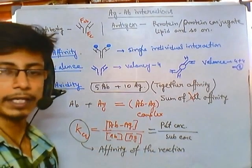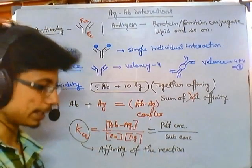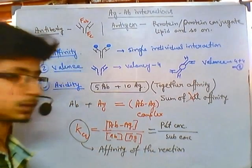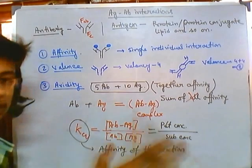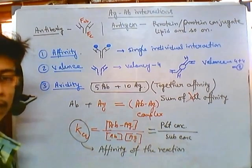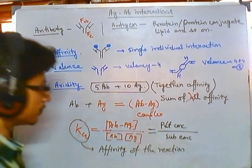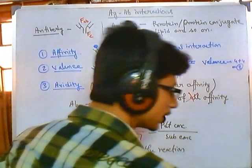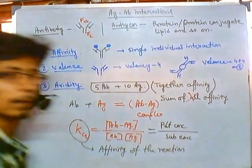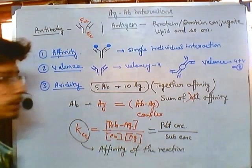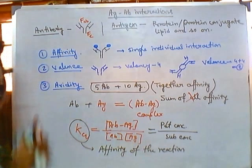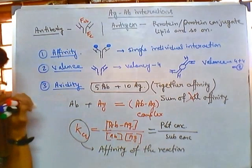So the avidity is different from affinity, as I have told you. Simply adding all the affinities together won't give the result for avidity. We need to take all those things together — considering valency and all interactions collectively. So these are affinity and avidity.